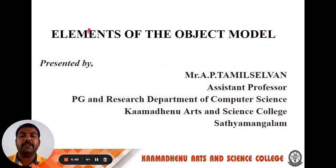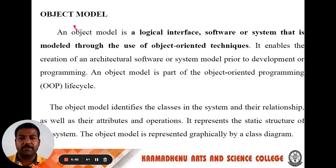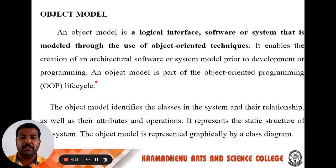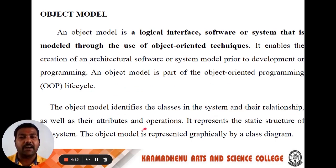Today we discuss about the topic of elements of the object model. First of all, what is object model? An object model is a logical interface, software, or system that is modeled through the use of object-oriented techniques. It enables the creation of an architectural software or system model prior to development or programming. An object model is part of the object-oriented programming life cycle. It identifies the classes in the system and their relationships, as well as their attributes and operations. It represents the static structure of the system and is represented graphically by a class diagram.